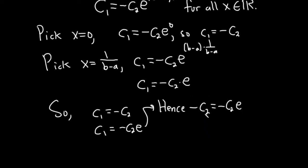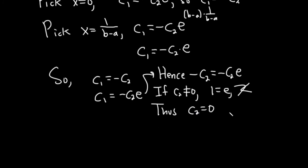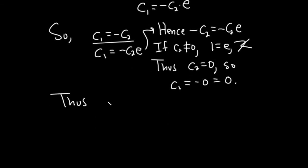So that means that if c2 is not zero, then we can divide by negative c2, we get one equals e, a contradiction. Thus c2 is equal to zero. It has to be zero, right? Because if it's not, then e is equal to one, which we know is false. So thus c2 is zero. And then that follows that c1 is equal to negative c2. So c1 is zero. So thus both c1 and c2 are zero. So c1 is equal to zero and c2 is equal to zero.